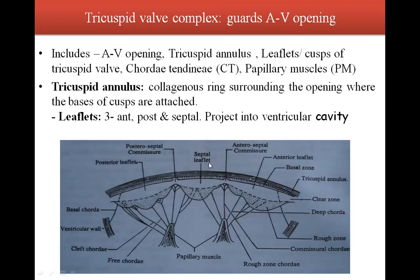The tricuspid valve complex guards the atrioventricular opening. It includes the atrioventricular opening, the tricuspid annulus, leaflets or cusps of the tricuspid valve, chordae tendineae, and papillary muscles. The tricuspid annulus is a collagenous ring surrounding the opening where the bases of the cusps are attached.